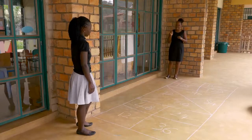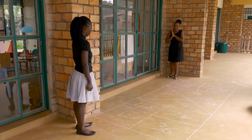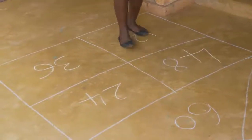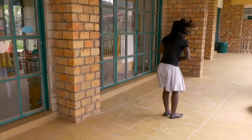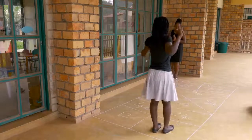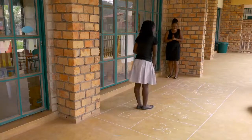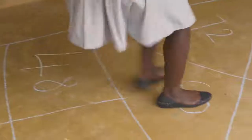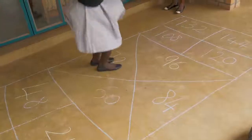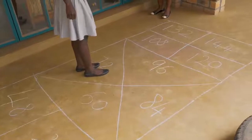12 times 1 is 12. 12 times 2 is 24. 12 times 3 is 36. 12 times 4 is 48. 12 times 5 is 60. 12 times 6 is 72.